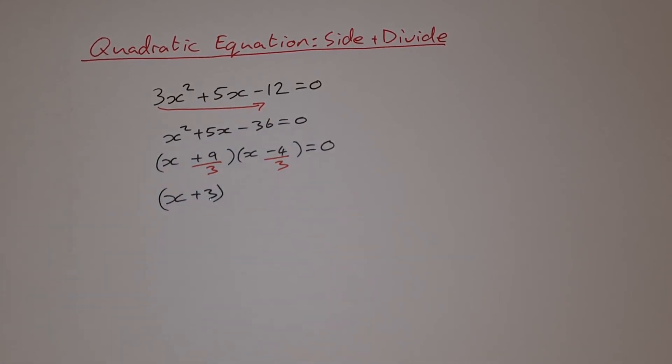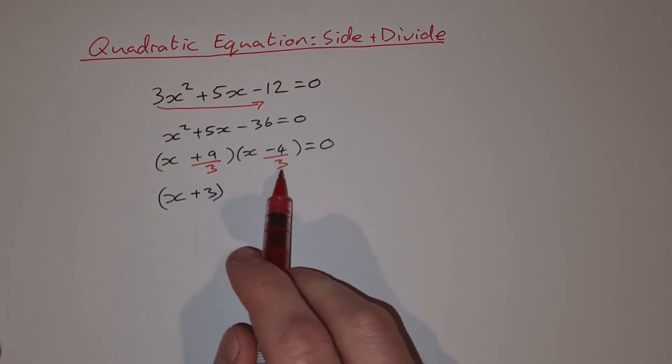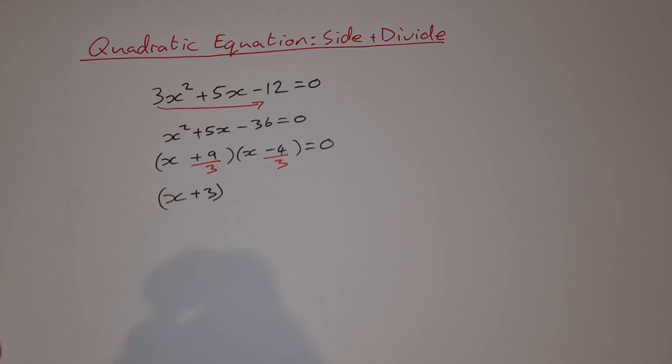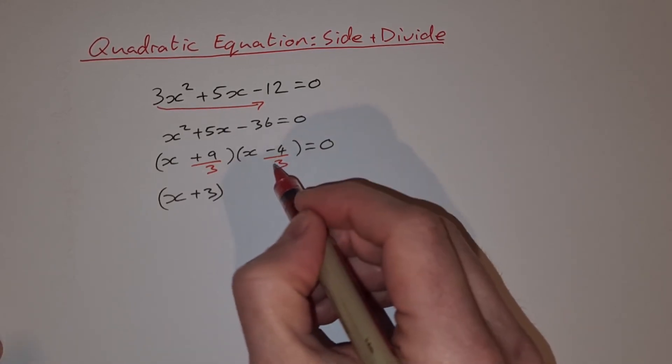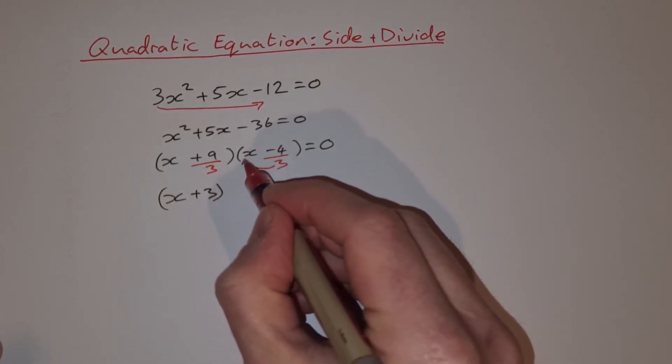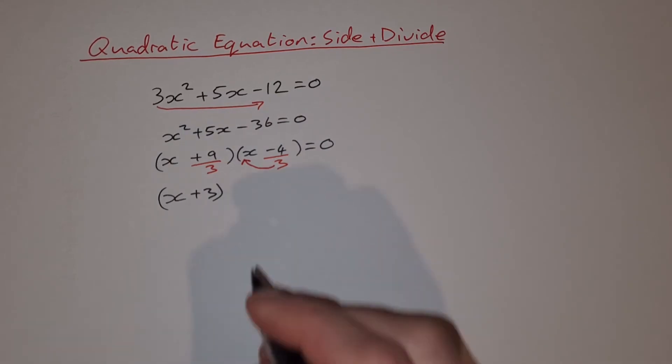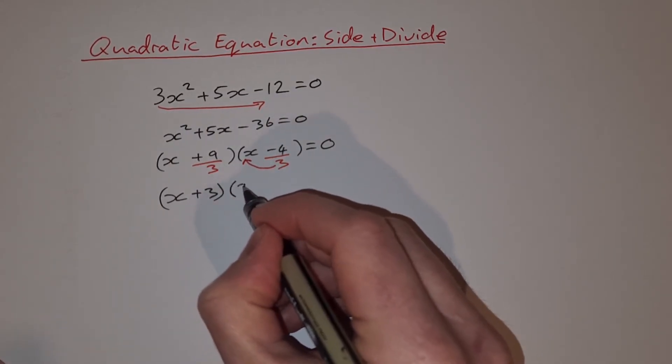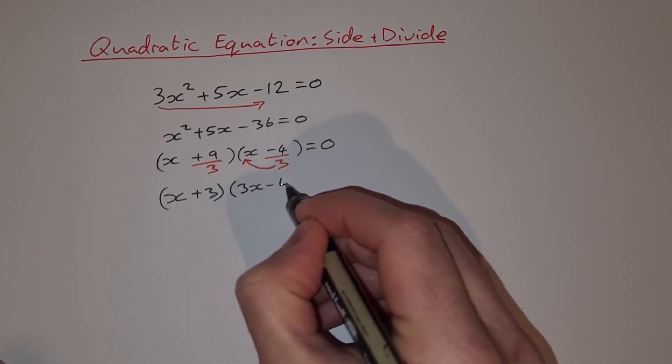But in the second bracket, it doesn't work. Minus 4 divided by 3 doesn't go in perfectly. So what we do is we're actually going to put that 3 up in front of this x here and rewrite it as 3x minus 4.